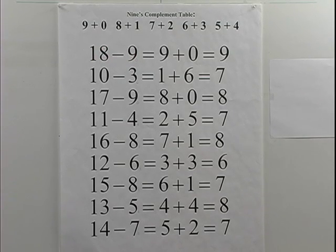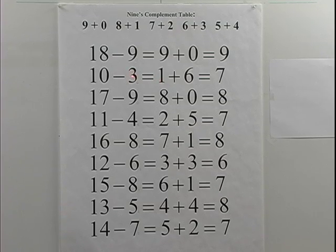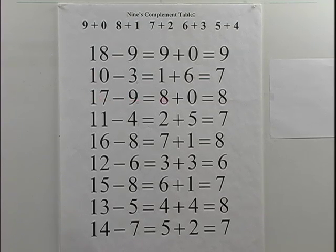Eighteen minus nine: one and eight is nine; nine's complement of nine is zero; nine plus zero equals nine. Correct. Ten minus three: one and zero is one; nine's complement of three is six; one plus six is seven. Ten minus three equals seven. Correct. Seventeen minus nine: one and seven is eight; nine's complement of nine is zero; eight plus zero is eight. Seventeen minus nine equals eight. Correct.